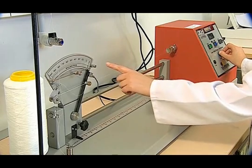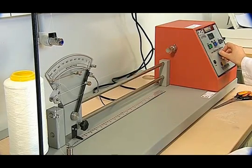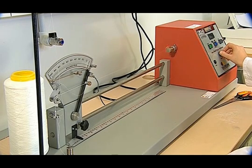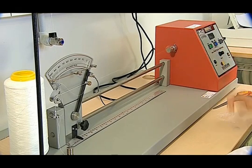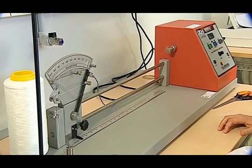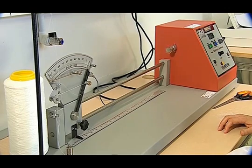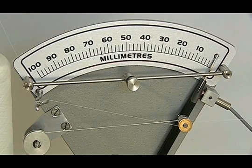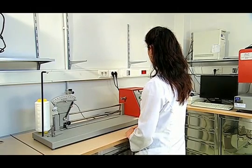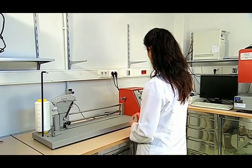And the pointer begins to move from the zero point. The test is carried on until the pointer returns to the zero point again. The device automatically stops when the pointer comes to the zero point. The test for a single sample is completed once the value of the twist from the counter is obtained.